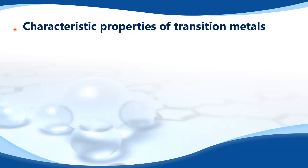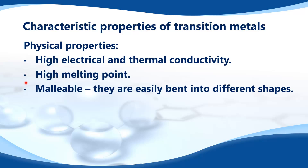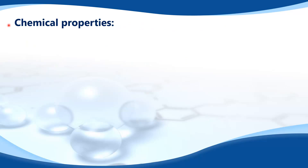First we look at the physical properties of transition metals. They have high electrical and thermal conductivity. They have a high melting point. They are malleable — they are easily bent into different shapes. They have a high tensile strength, and they are ductile — they can be made into wires.